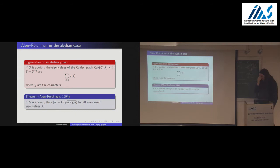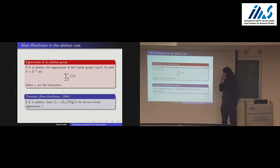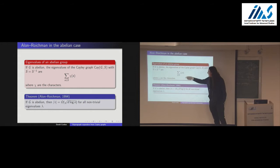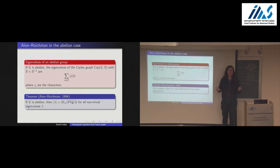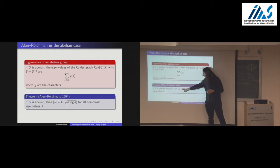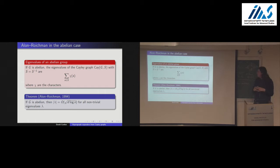In the abelian case, Alon-Roichman is very easy to prove because you can write out explicitly what the eigenvalues are. For each character, you just sum over the elements of your generating set. If this is a random set, they're distributed randomly on the unit circle; when you add them up they should typically be around root D in size. If you want all N of them to be small, you can guarantee they're less than root D times log N with high probability. There's a generalization to the general case using irreducible representations instead of characters.